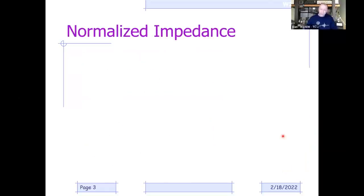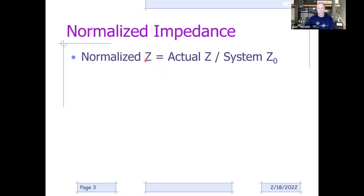Before we get into the Smith chart, we need to talk about normalized impedance. The Smith chart isn't really drawn to represent a 50-ohm environment specifically—it can be used in any impedance environment: 50-ohm, 600-ohm, 75-ohm, etc. The way we use the Smith chart across various impedance environments is to take the actual measured or calculated impedance and divide it by our system impedance. For 90% of what we do as hams, that system impedance is 50 ohms.